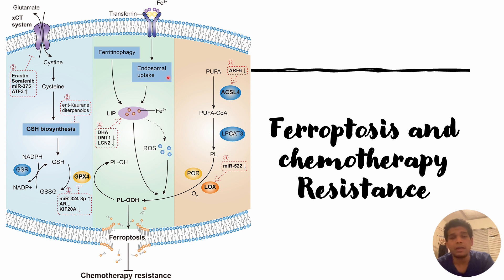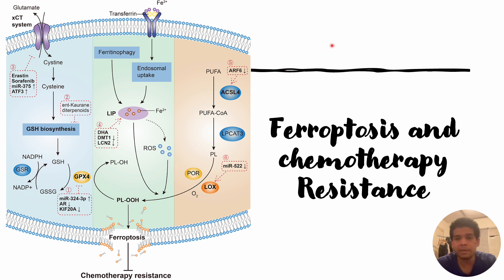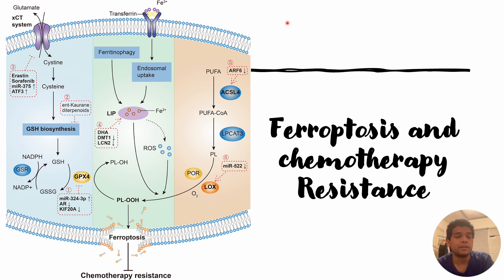These are some of the approaches that can be used to trigger ferroptosis in cells that are resistant to chemotherapy. I hope you have a basic idea about how ferroptosis can be triggered and what inhibitors can be used. For more detail on the relationship between ferroptosis and chemotherapy resistance, you can refer to the reference provided in the description. Thank you for your time.